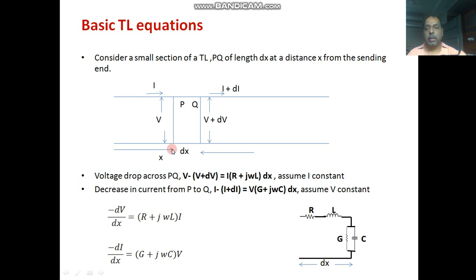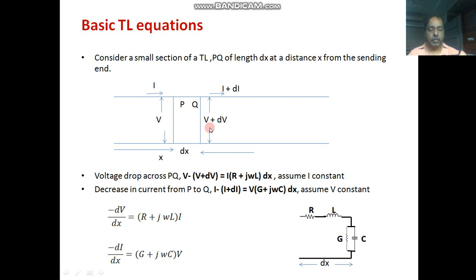Suppose at a distance x the voltage is v and the current at this point is i. After traveling a distance dx, the current is i plus di and the voltage across this point is v plus dv. These voltages will not be equal because here R and L will be present, and this current will drop because here you will find the values of G and C — so current will drop and voltage will also drop.